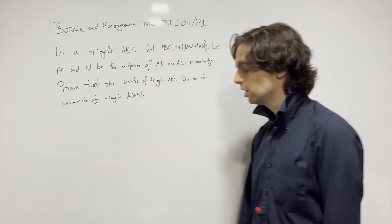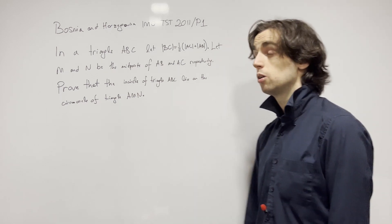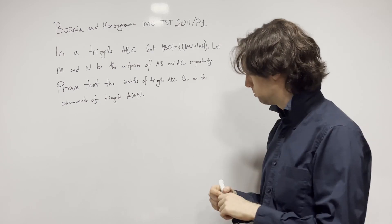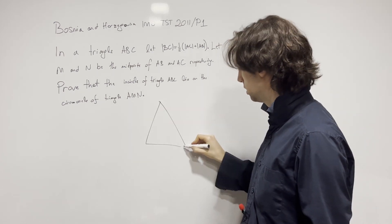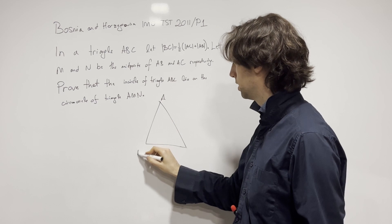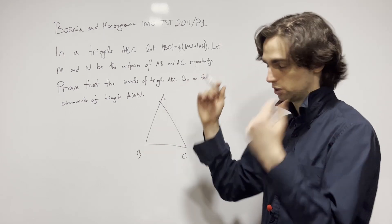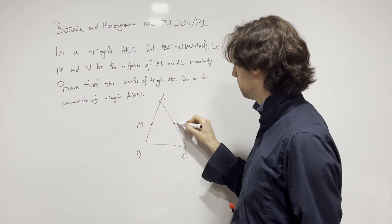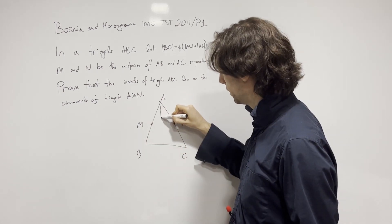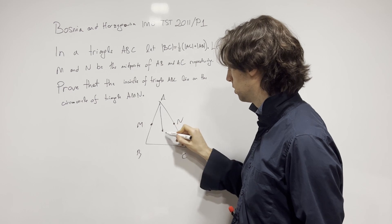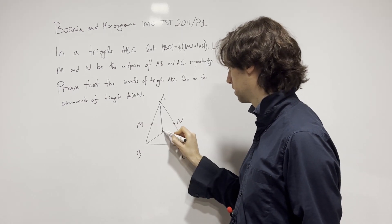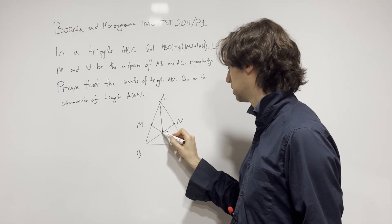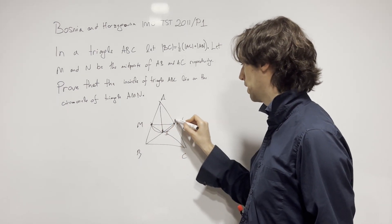There are a couple of ways we can go about doing this. One way is to say, well, what is it that we need to prove? Let's actually draw this thing — triangle ABC. Let's assume this condition holds. So M, N, and we have the incenter I. We need to show that I lies on the circumcircle around this triangle AMN.